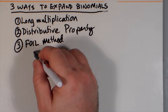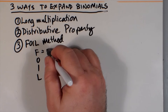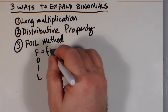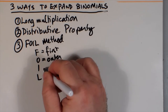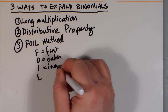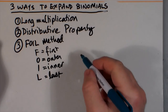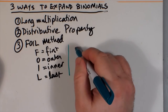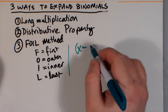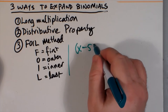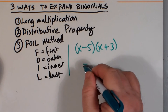Then there's the FOIL method. The FOIL method is the famous method that stands for First, Outer, Inner, and Last — F for First, O for Outer, I for Inner, and L for Last. They refer to the terms in a binomial expansion. We'll use the FOIL method once again for the binomials which we were examining earlier.